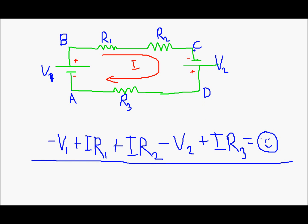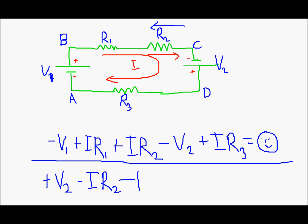So first, from D to C, I see the positive plate of V2, so I will write plus V2. The next thing I see is R2 and I am travelling against the direction of current — current is flowing this way and I am travelling the opposite way — so I will write minus IR2. The next thing is R1. Again I am travelling against the direction of current, so I will write minus IR1.